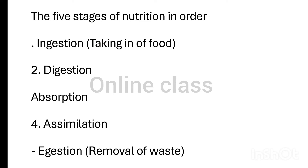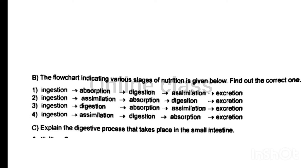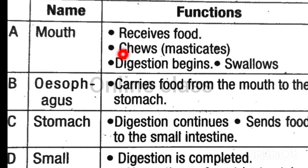The five stages are: ingestion, digestion, absorption, assimilation. Explain the digestion process that takes place in the small intestine.